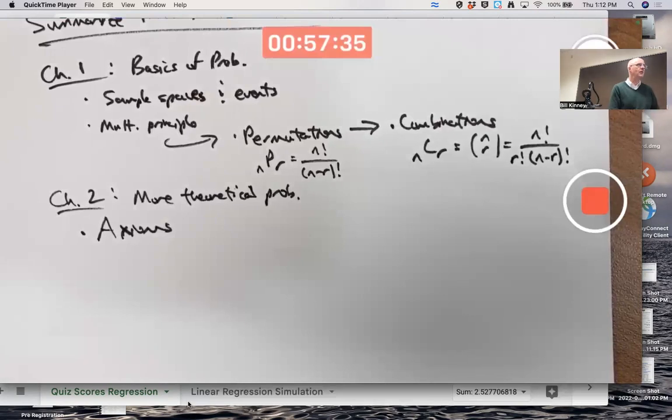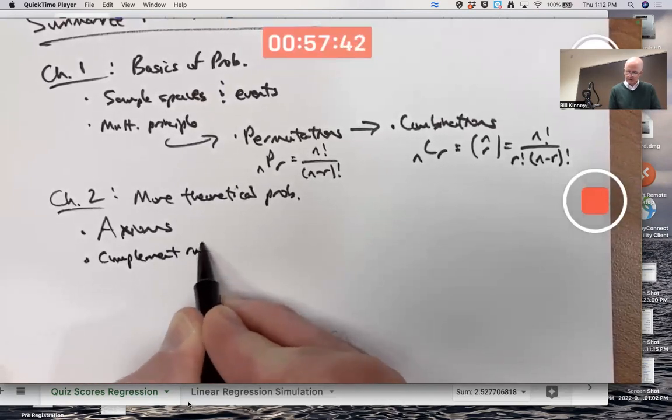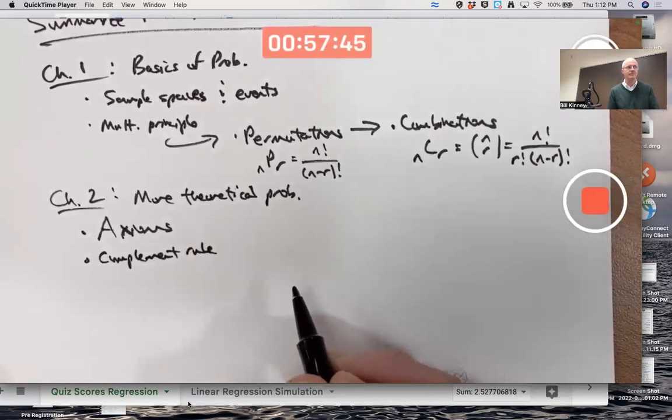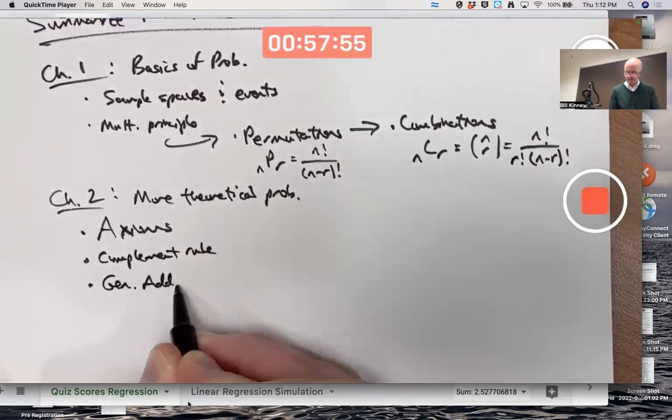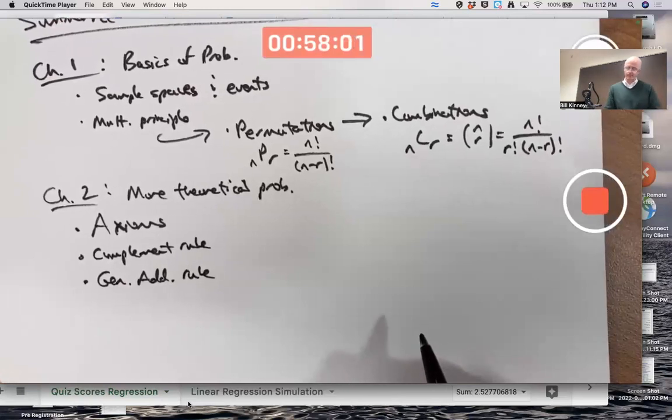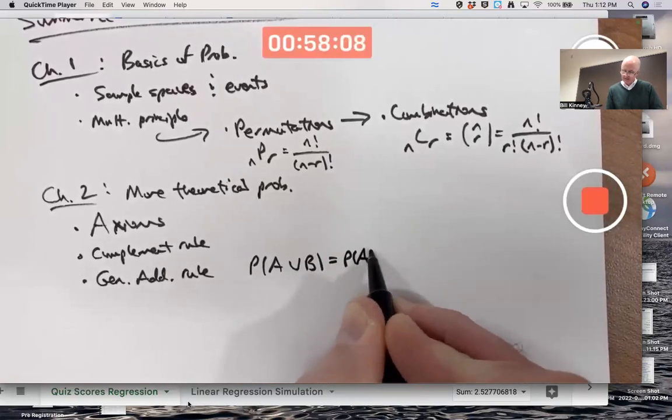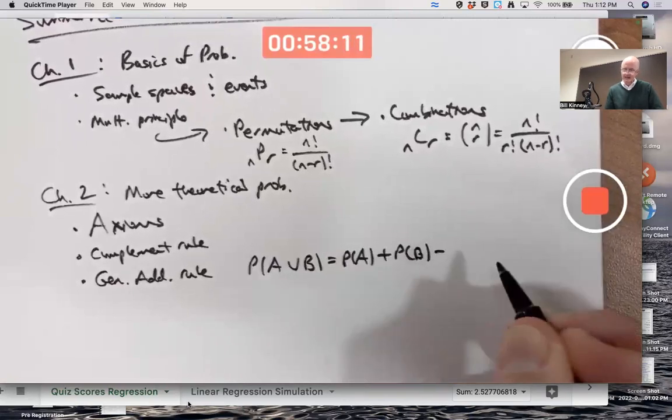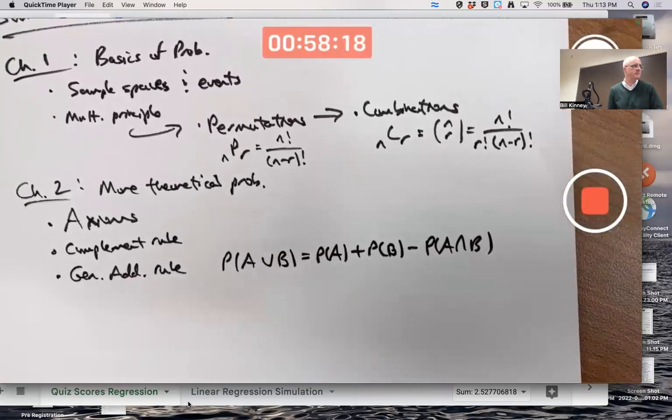It applies to more than two events that are all mutually exclusive. And then you have things you can prove from that. Probability of the empty set is zero. You've got the complement rule. Probability of A plus the probability of its complement is one. You've got then that generalizes to the general addition rule. Probability of A or B in general is the probability of A plus the probability of B minus the probability of A intersect B. Makes sense with Venn diagrams. Examples like cards and things like that helps you understand that.